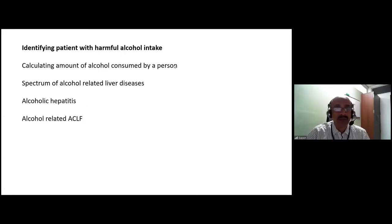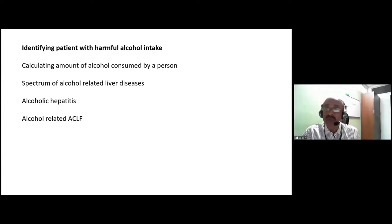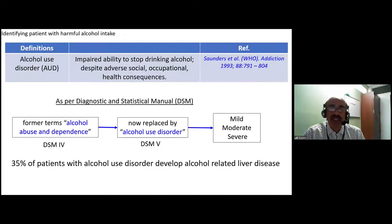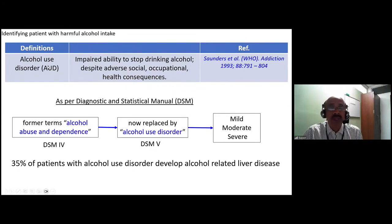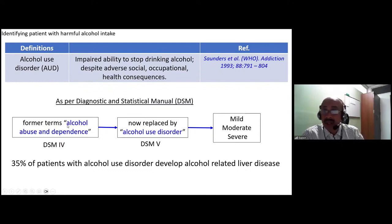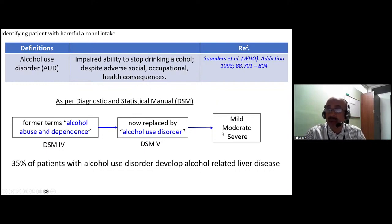First of all, the names change with the times. What was earlier called alcoholic liver disease is now considered to be a bit discriminatory and carries some stigma. It is currently suggested the name should change to either alcohol-related liver disease or alcohol-associated liver disease. The term now used is alcohol use disorder, defined as an impaired ability to stop drinking alcohol despite adverse social, occupational, and health consequences. As per DSM-5, the earlier terms of alcohol abuse and alcohol dependence have been replaced with alcohol use disorder, categorized as mild, moderate, and severe. About 35% of patients with alcohol use disorder will develop alcohol-related liver disease.